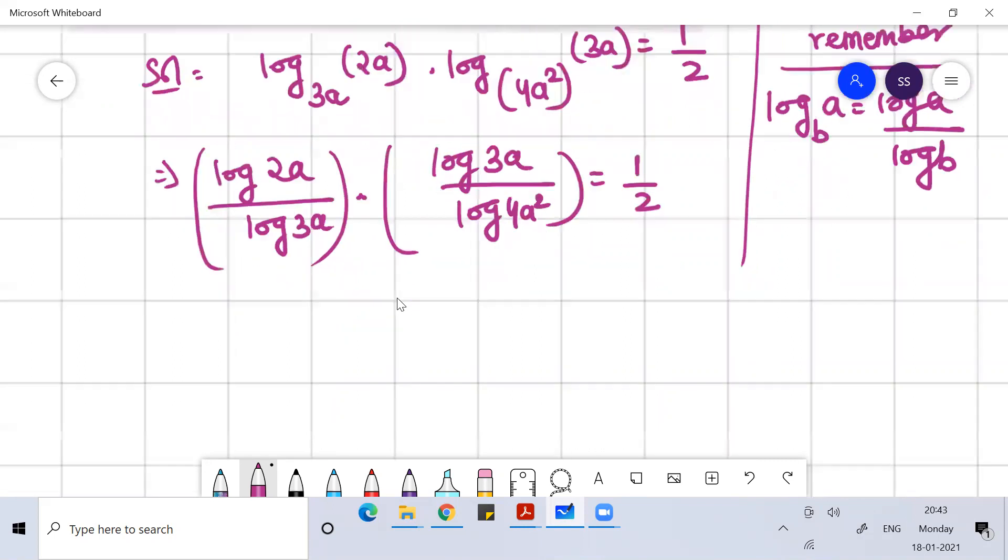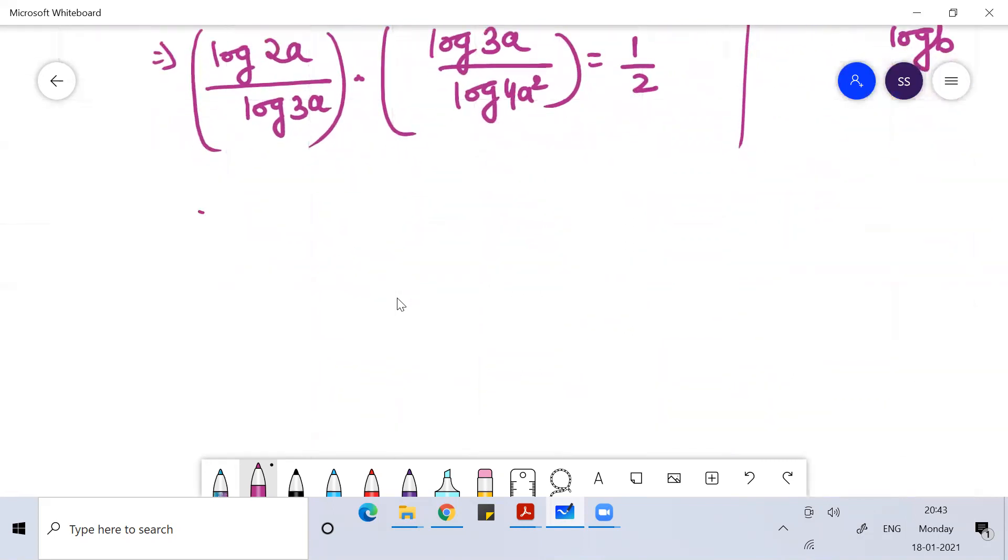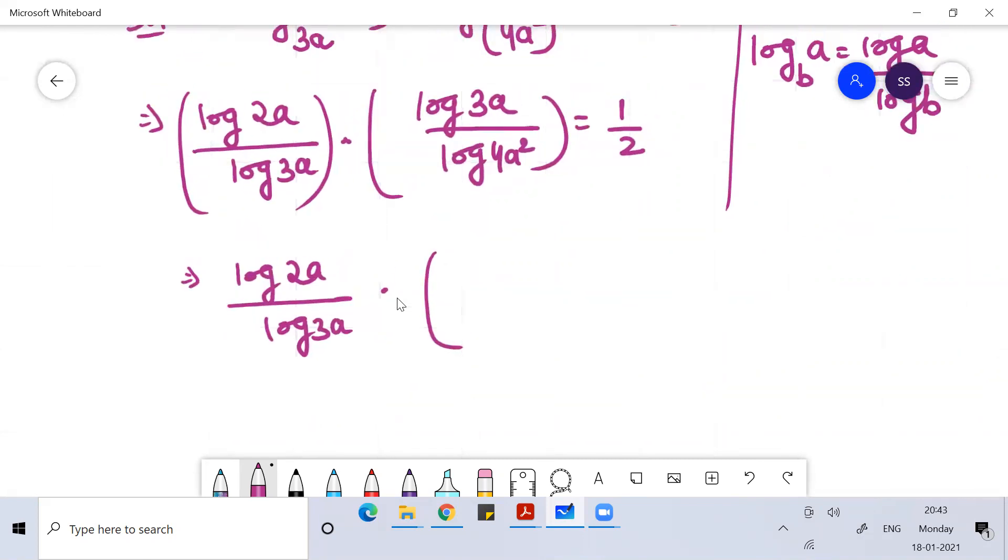So going further, if I write this, log 3A by log 4A square, I can write as log 2A whole square.